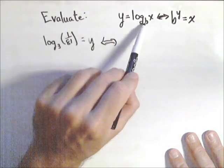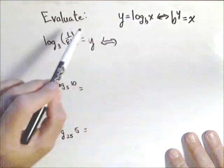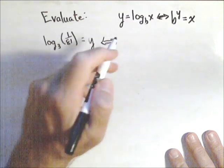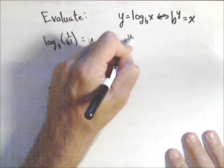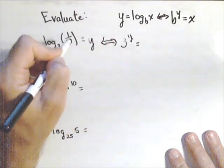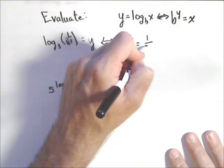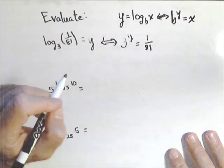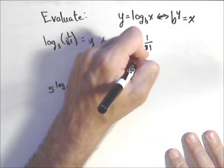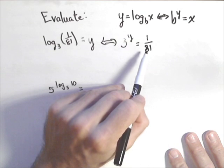Notice what happens: b to the y equals x. Base to the y, so 3 to the y equals x, which in this case is 1/81. There's the equation we're trying to solve without a calculator. The question is,